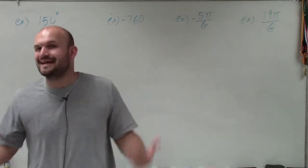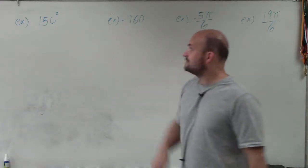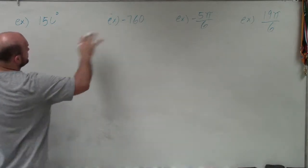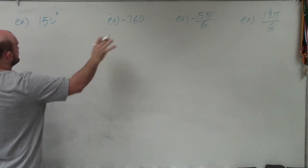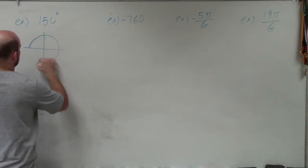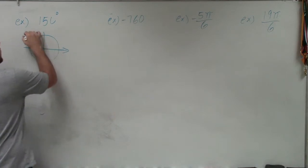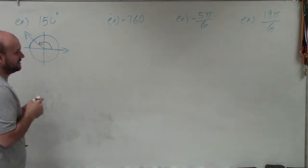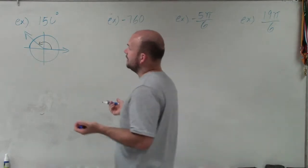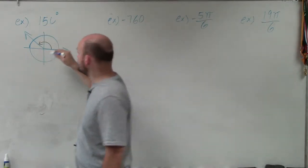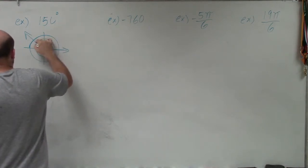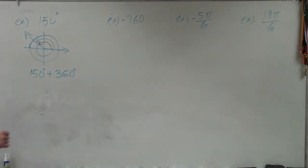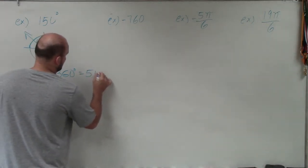Sometimes it's helpful to sketch the graph, but it's not always necessary. For instance, I have 150 degrees. For the first two examples I will show a picture. So 150 degrees, if I was going to sketch that, it actually looks very similar to what I initially did — that angle is going to look something like that. If I want to find a positive coterminal angle, all I simply need to do is add a revolution: 150 degrees plus 360 degrees, and that gives me 510 degrees.